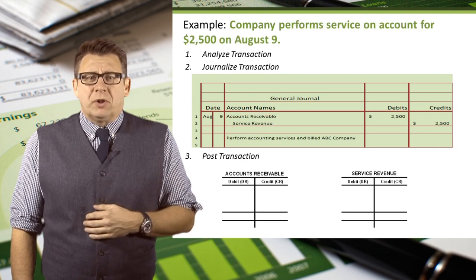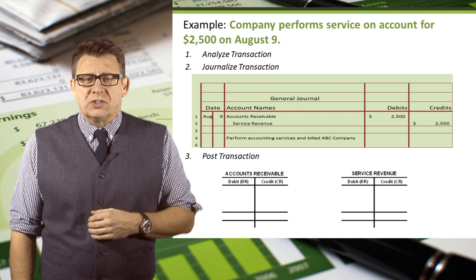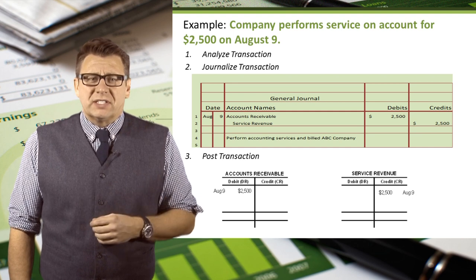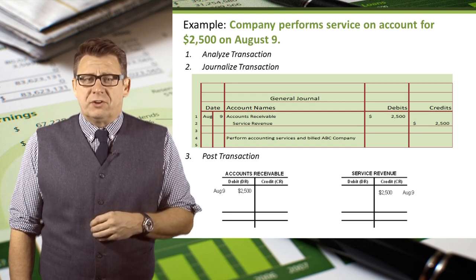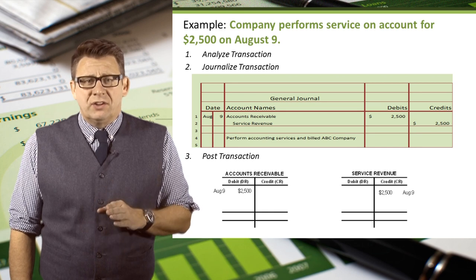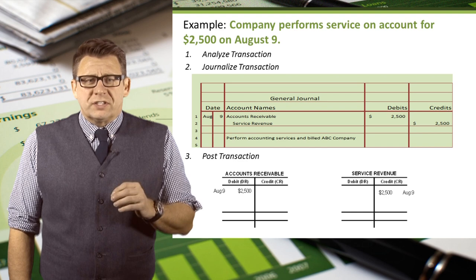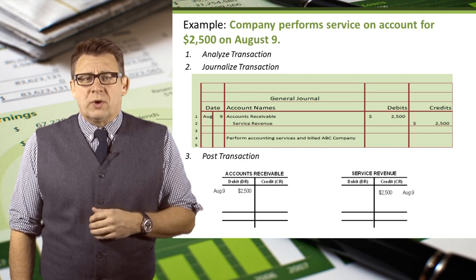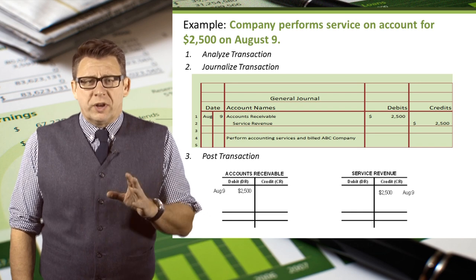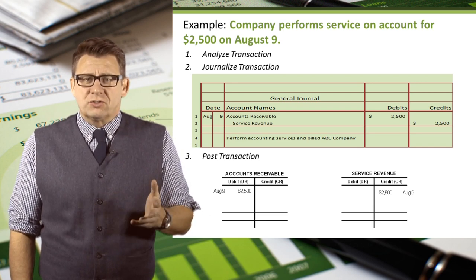In this next example, a company performs service on account for $2,500. The date is August 9th. Accounts receivable is the debit account and the amount is $2,500, so we post $2,500 and the date to the debit side of accounts receivable. Service revenue is the credit account and the amount is $2,500, so we post $2,500 and the date to the credit side of service revenue.